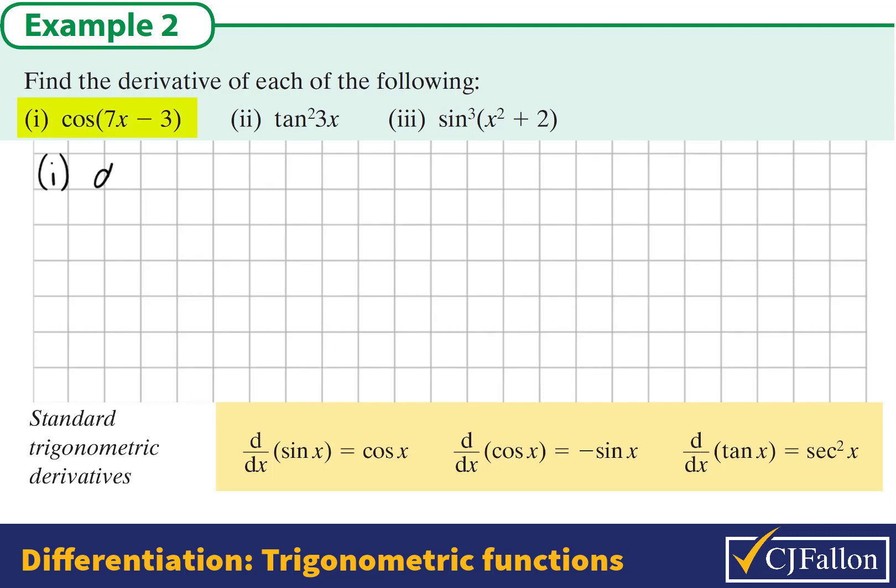There are two layers of this function so we use the chain rule. The outside layer is the cosine of the angle and the inside layer is the angle itself.